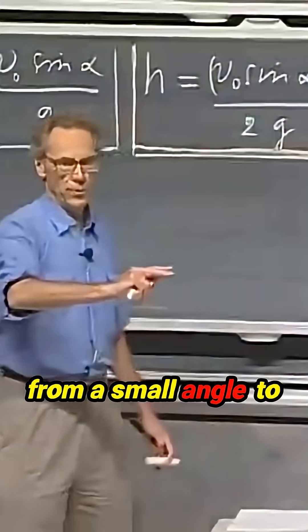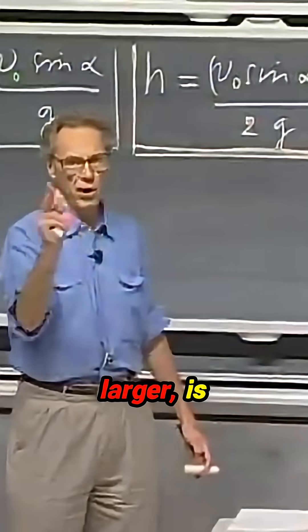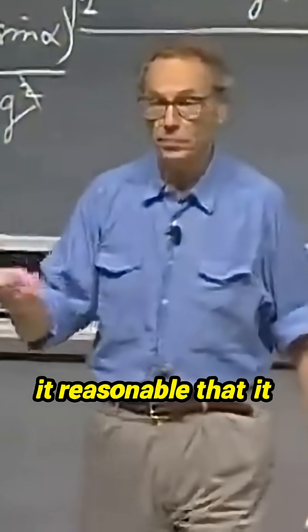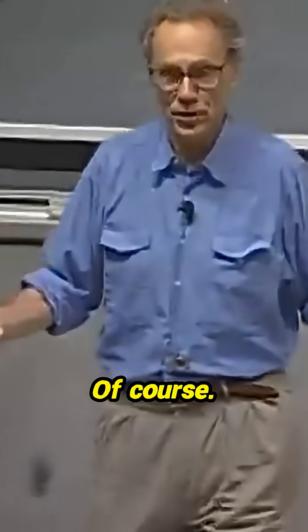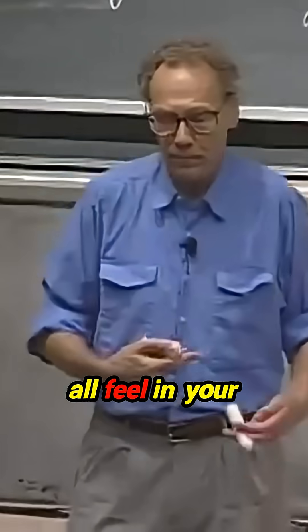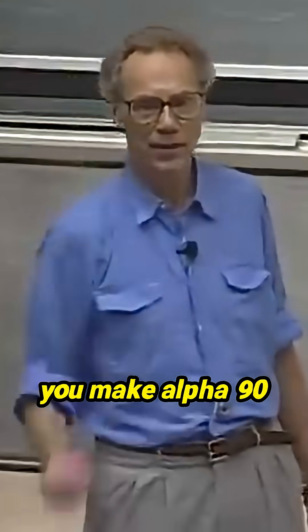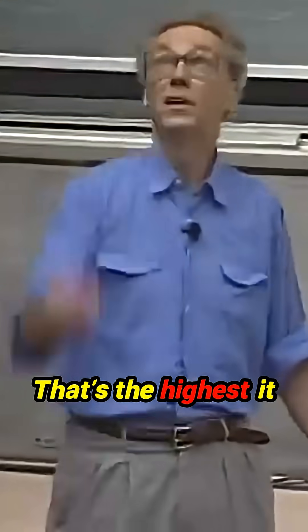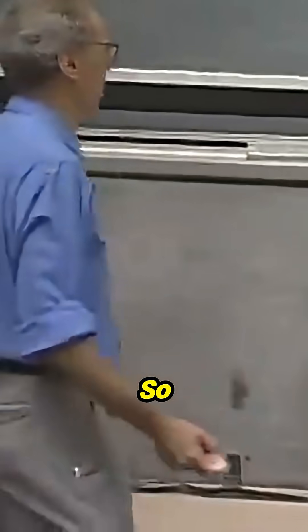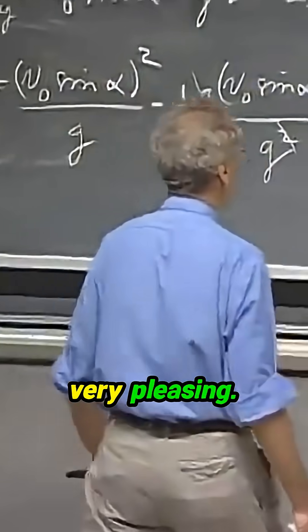So it is completely intuitive that v zero is upstairs. If I increase the angle from a small angle to larger and larger, is it reasonable that it will get higher? Of course. You all feel in your stomach that the highest possible value you can get is when you make alpha 90 degrees for a given velocity. That's the highest it will go in the sky. So clearly this is also very pleasing.